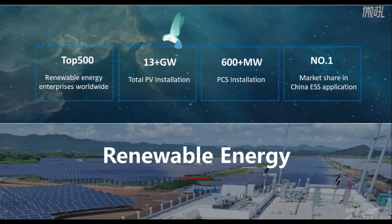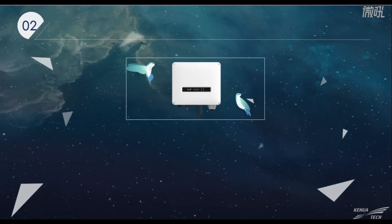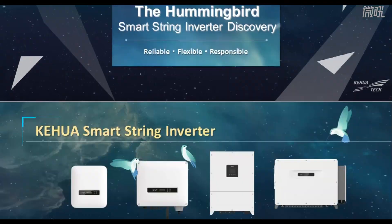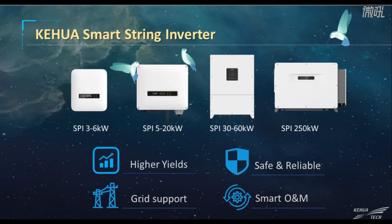For energy storage, the installation capacity is over 600 MW, and the market share of Keihua in China's ESS application is number one. Keihua has string inverter solutions from residential, commercial, and industrial to utility-scale solar applications. We always bring core value for customers throughout the product lifecycle, including higher power generation benefits, durable safety and reliability, grid-friendly active support, and smart operation and maintenance to reduce cost.